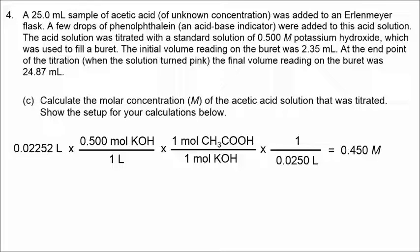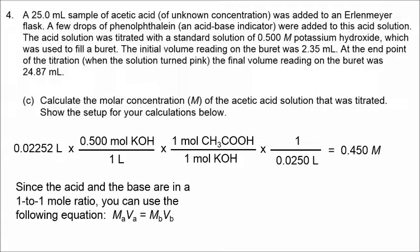We get the molarity of the acetic acid as 0.450 moles per liter. This makes sense because the volume of acetic acid was slightly greater than the volume of potassium hydroxide. Since they had the same number of moles, a greater volume of acetic acid means its concentration was slightly less than the concentration of KOH. Another way to solve this is using M times V equals M times V, but that equation applies only when there is a one-to-one mole ratio — we could not have used it for calcium hydroxide and nitric acid, which had a one-to-two ratio.